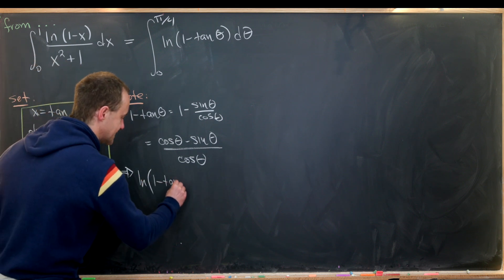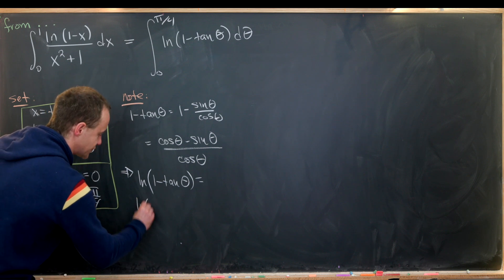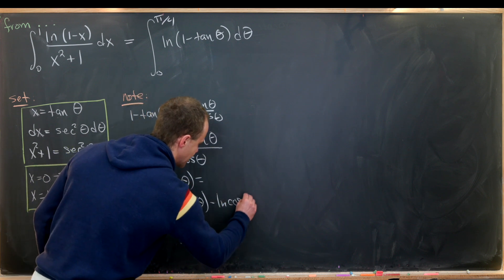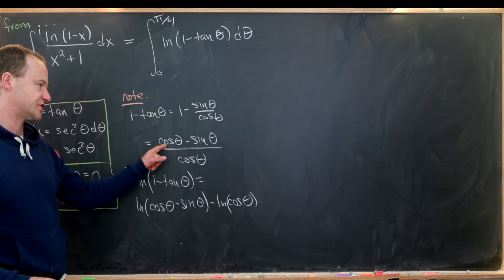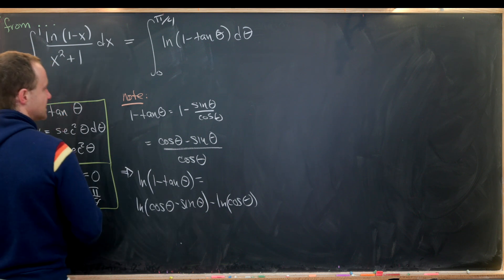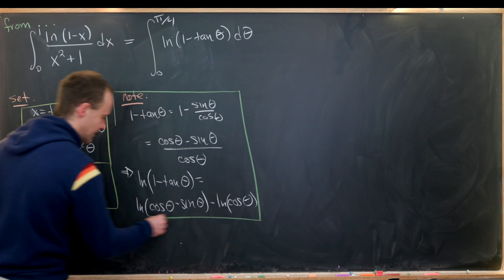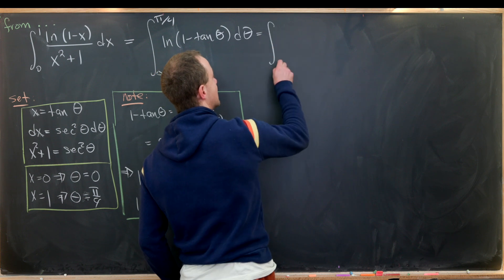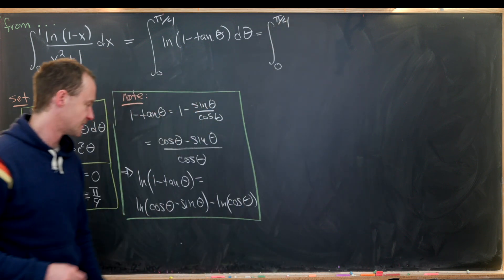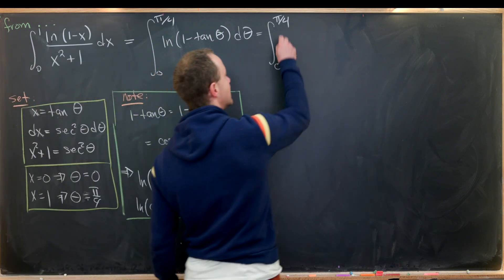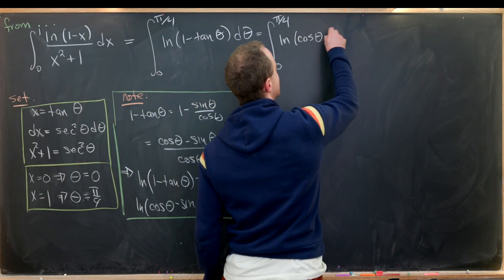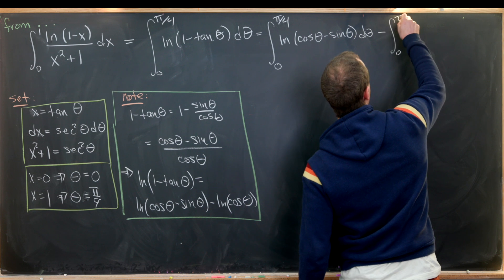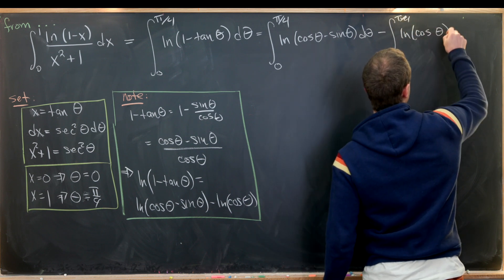The natural log of 1 minus tangent theta equals the natural log of (cosine theta minus sine theta) minus the natural log of cosine theta, using a logarithm rule to turn the quotient into a difference. That allows us to rewrite this as the difference of two integrals: the integral from 0 to pi/4 of ln(cos θ − sin θ) dθ, minus the integral from 0 to pi/4 of ln(cos θ) dθ.